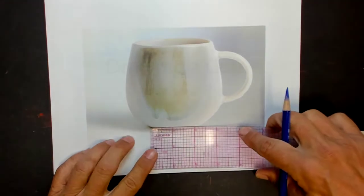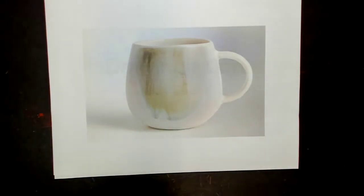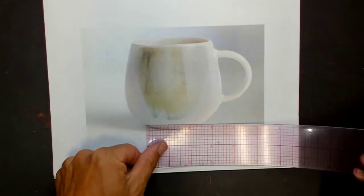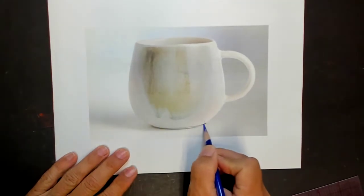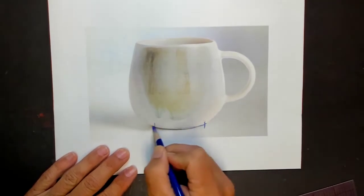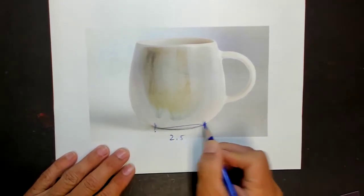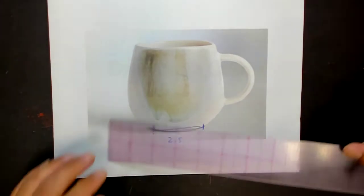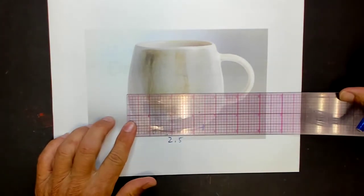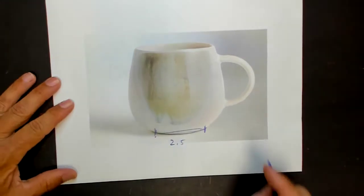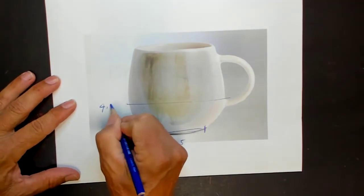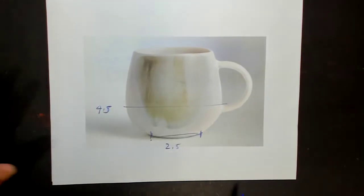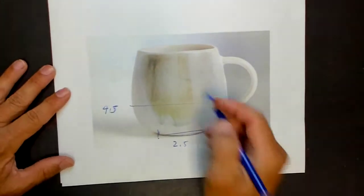So first thing I'm going to do is measure this thing out. And I'm just going to round off these measurements. This is about two and a half inches. So the bottom of this cup is about 2.5. And the widest spot is about four and a half inches. And then the top of this cup is about three and a half inches.